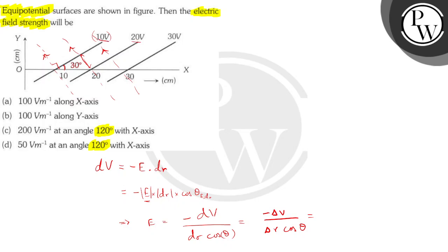So we have 20 minus 10, minus 10, delta V is 10 divided by R is going to be 20 minus 10 again 10 into, since it's in centimeter, we have to multiply it by 10 power minus 2 to bring it back to SI units times cos of 120.